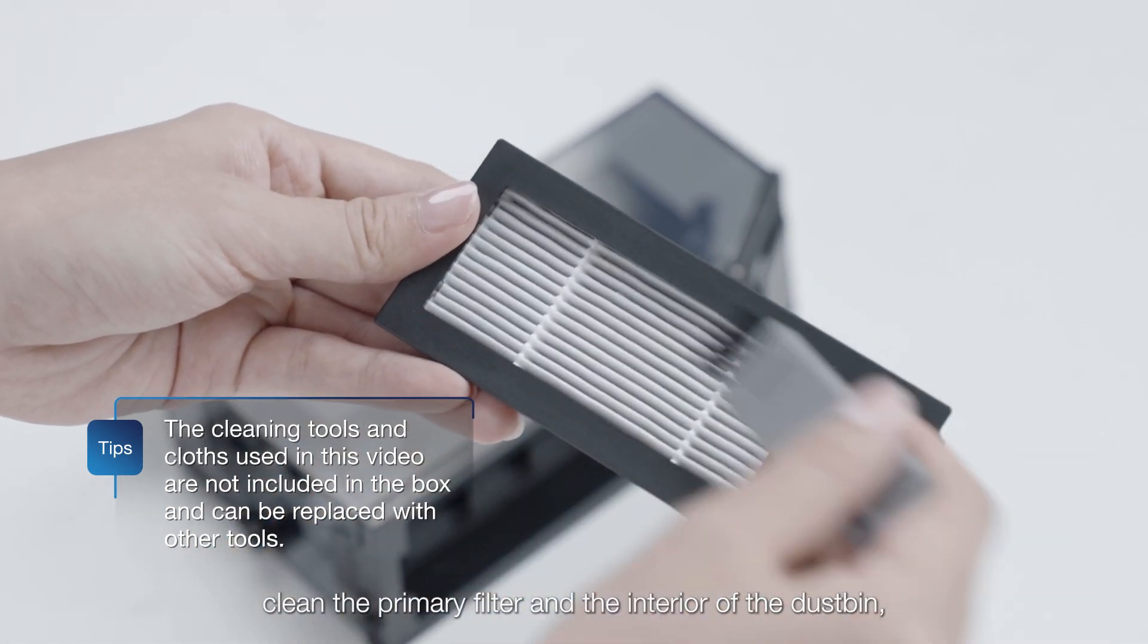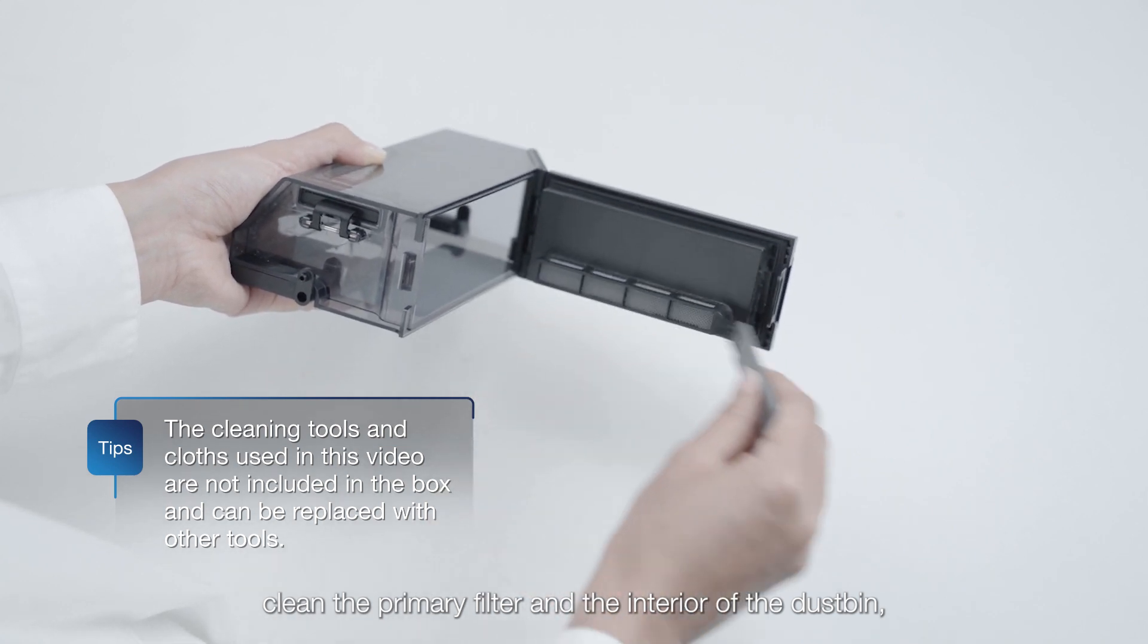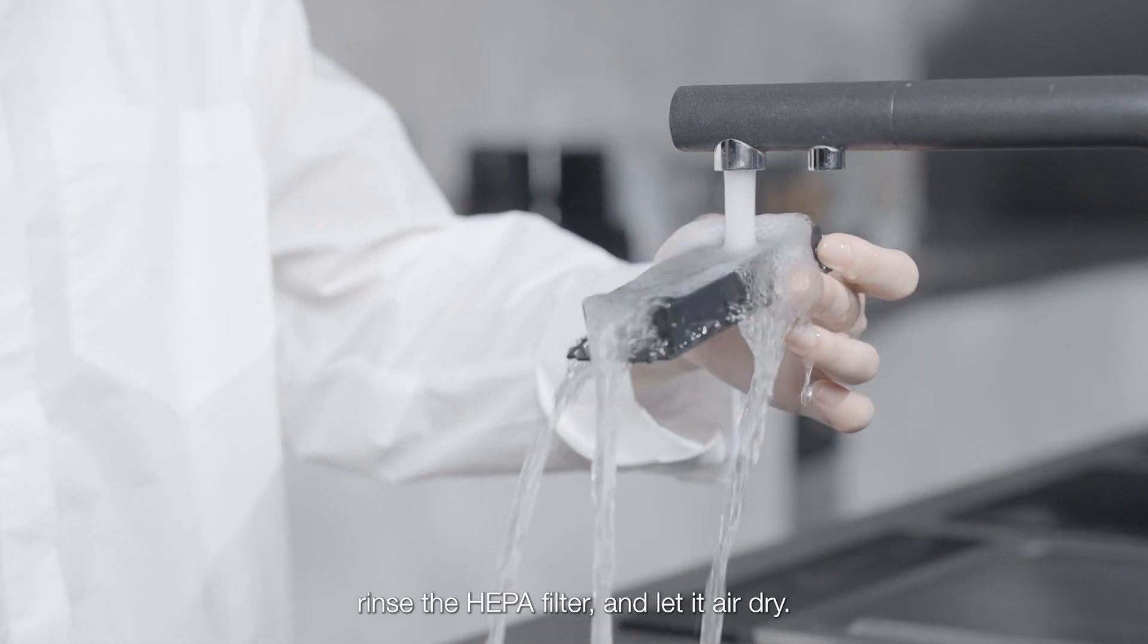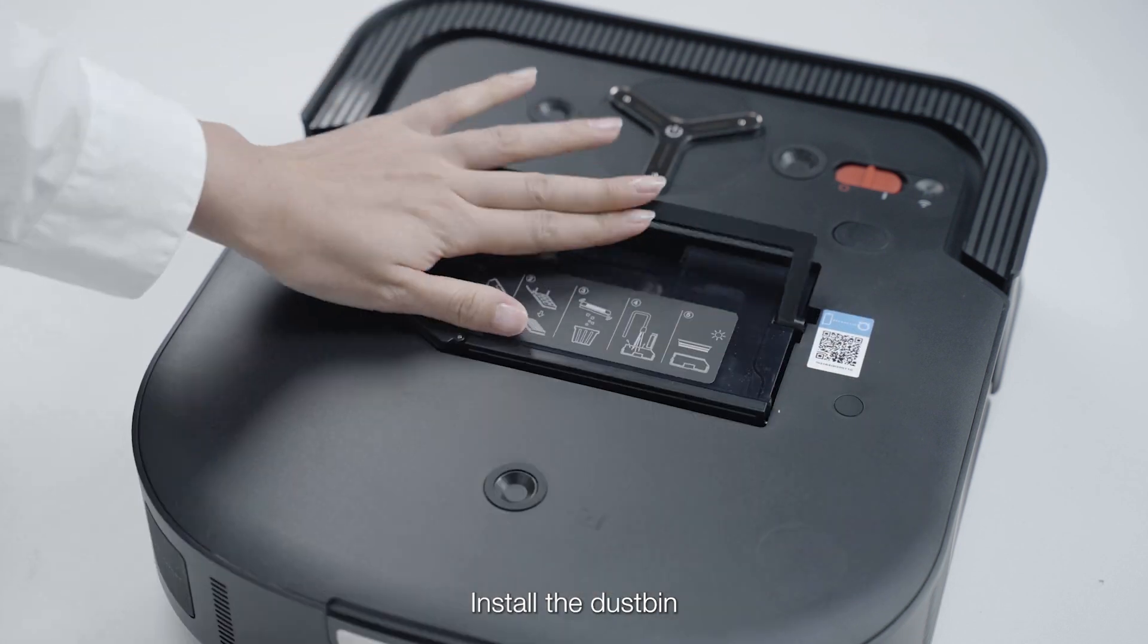Clean the primary filter and the interior of the dustbin. Rinse the HEPA filter and let it air dry. Install the dustbin.